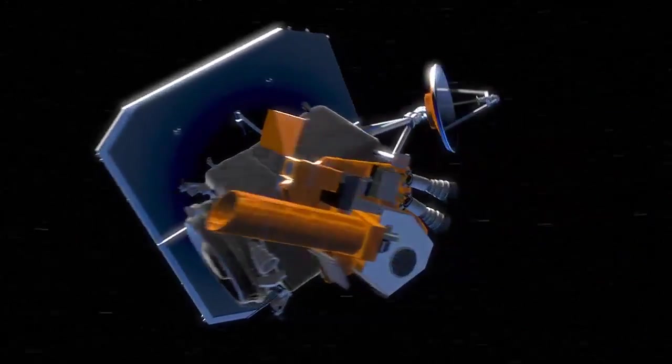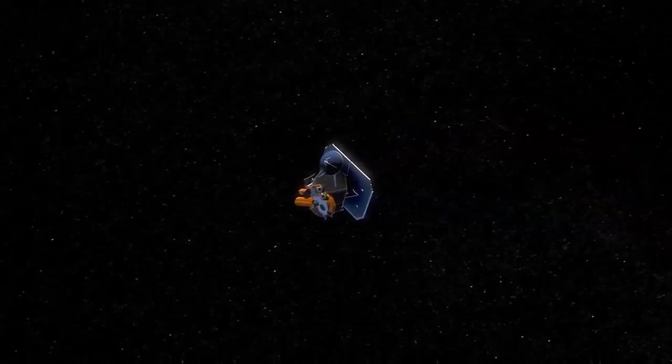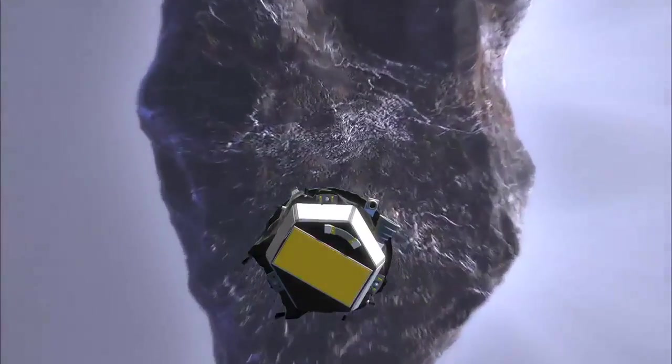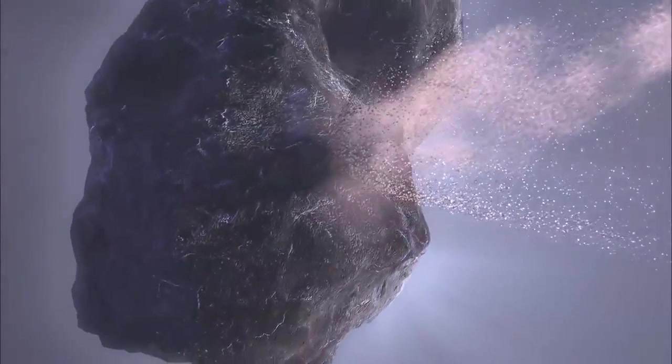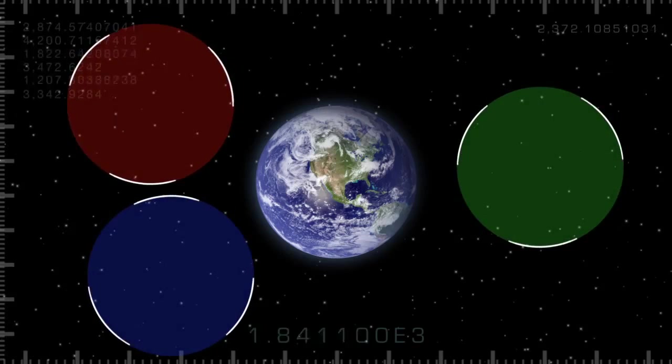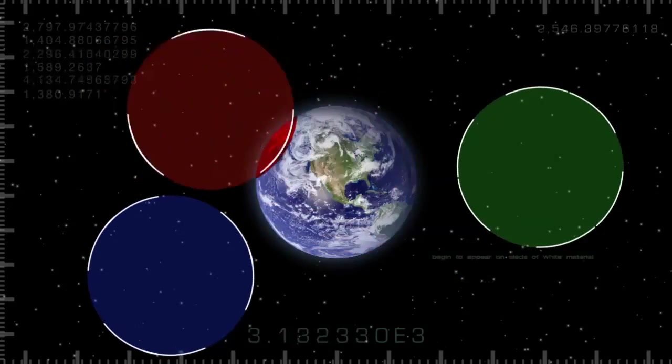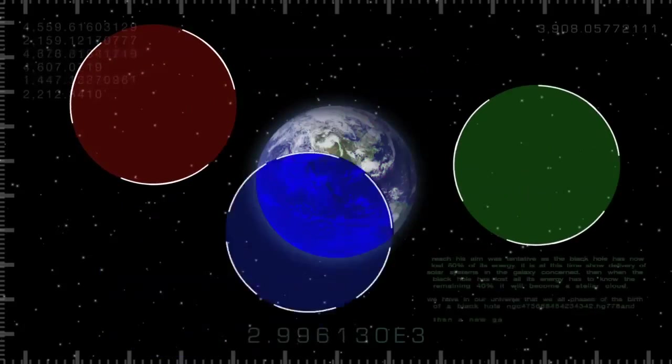Well it turns out they can. Remember the Deep Impact mission, the NASA spacecraft that slammed a probe into a comet in 2005? Well now it's headed for another comet. While on its way we used its instruments to study the amount of red, green and blue light reflected by Earth, the Moon and Mars.